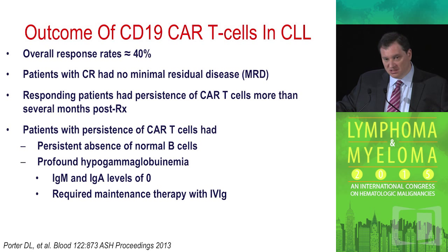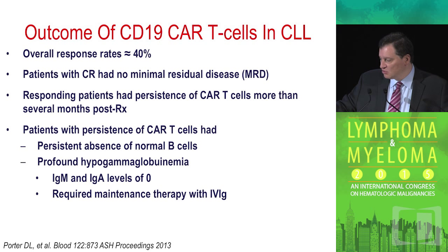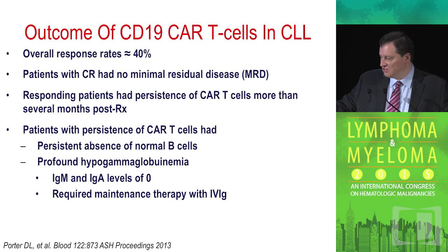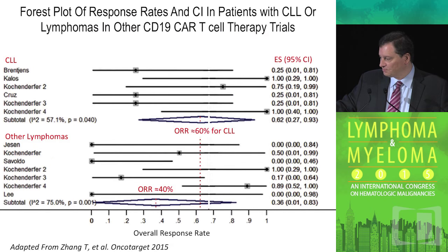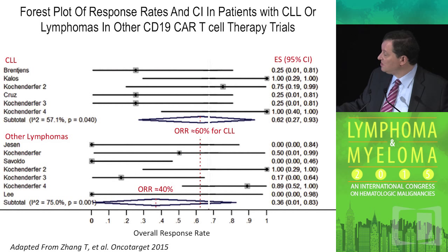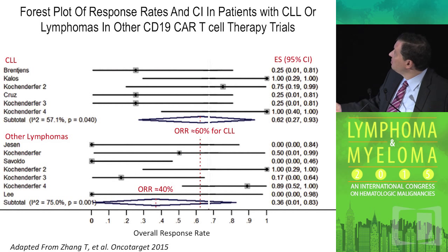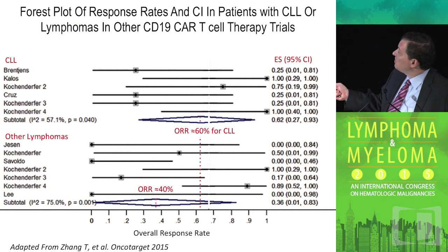Responding patients had persistence of the CAR T-cells — that's the most important point to emphasize. But they did have absence of normal B-cells, profound hypogammaglobulinemia, and required maintenance IVIG for life. A meta-analysis of all the different trials shows that 60% becomes the overall response rate across these different trials.